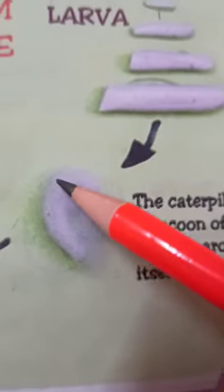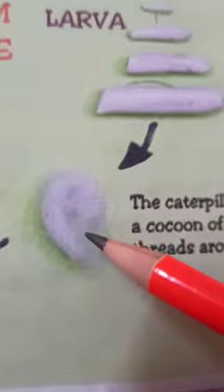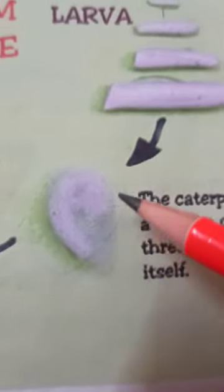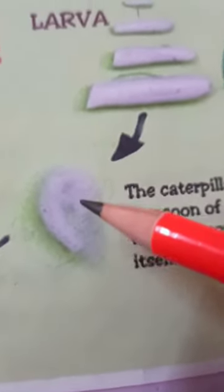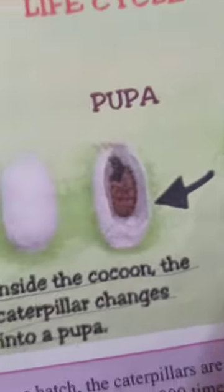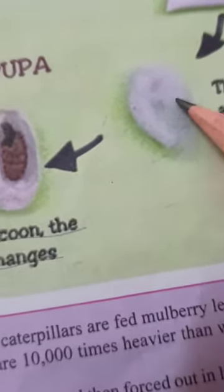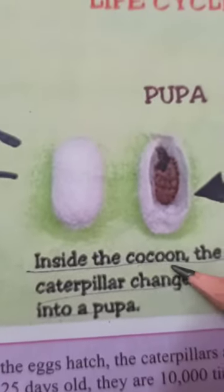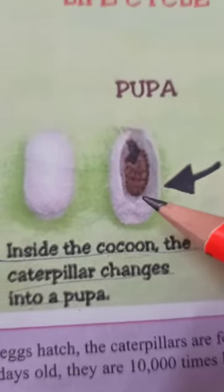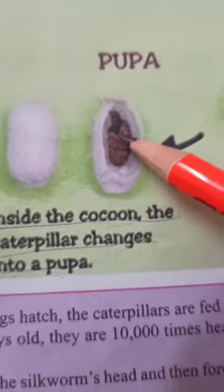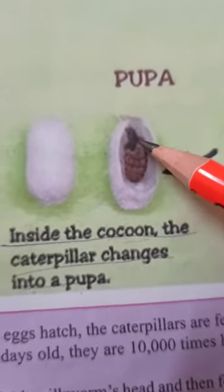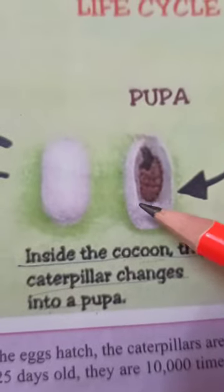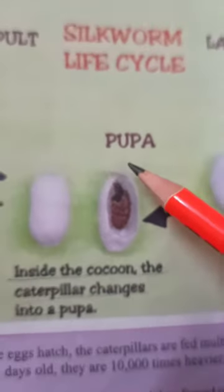The caterpillar spins a cocoon of silk threads around itself. At this stage the caterpillar starts releasing thread-like structures around it, wrapping itself in fibers of silk. When it has wrapped silk fibers around itself, we call it a cocoon. Inside this fibrous structure, the caterpillar becomes a pupa — this stage is called the pupa stage.